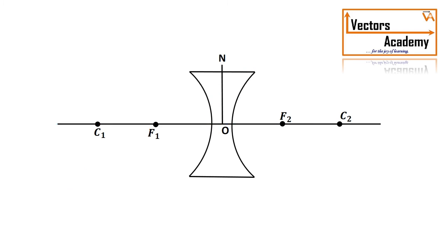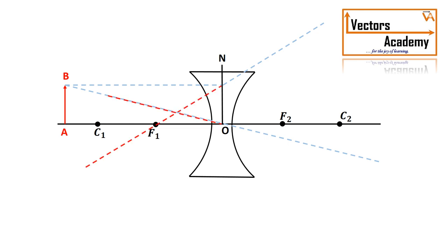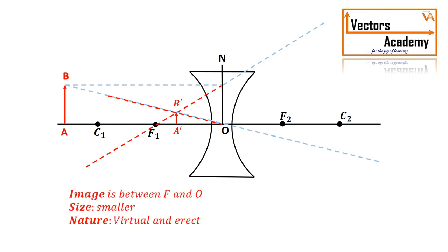If we bring the object closer to the concave lens, the ray through the optical center goes straight, and the ray parallel to the principal axis is refracted and, when extended, passes through the focal length. The image formed is not a point image; it is on the same side as the object, erect, and diminished. The image is formed between the optical center and the focal length. In a concave lens, no matter where the object is placed, the image is always virtual, diminished, and erect.